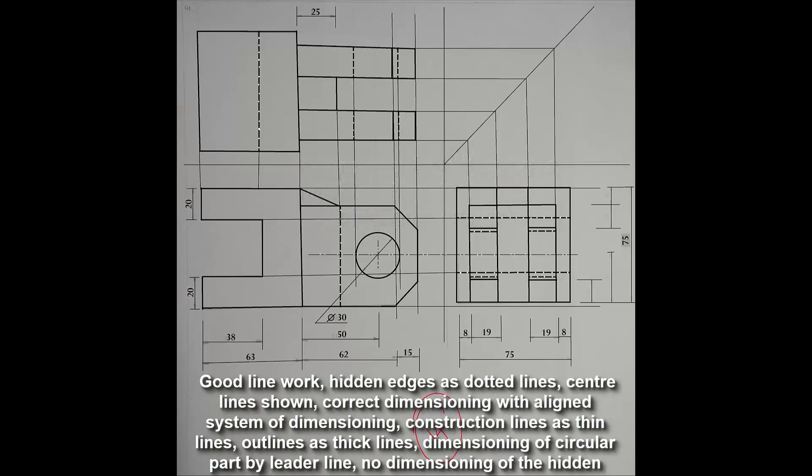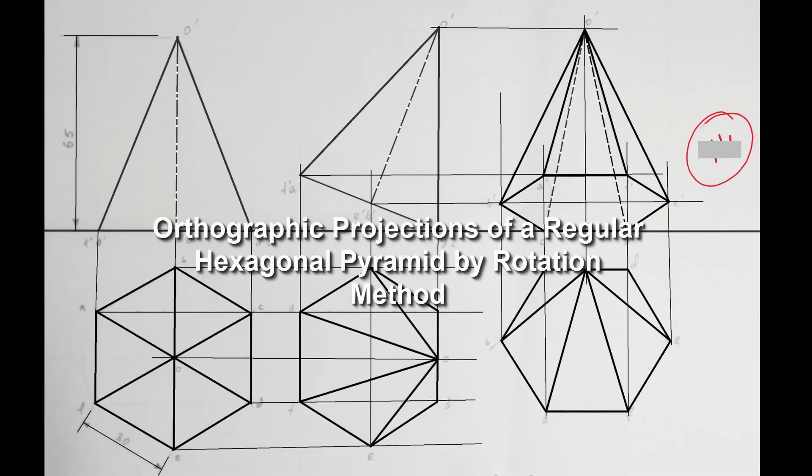Here we see good line work. Hidden edges are dotted line. Center lines shown. Correct dimensioning with aligned system of dimensioning. Construction lines are thin lines. Outlines are thick lines. Dimensioning of circular part is given by leader line.